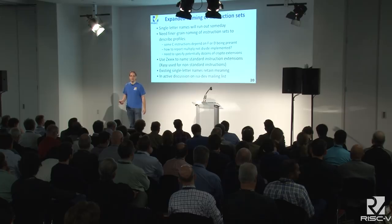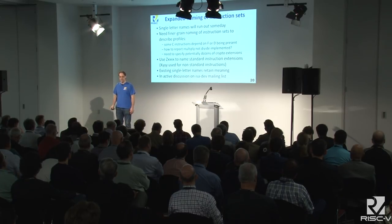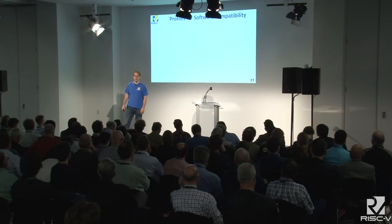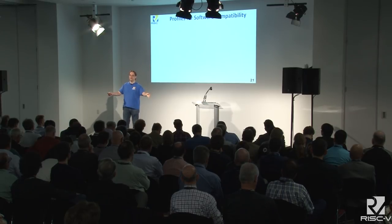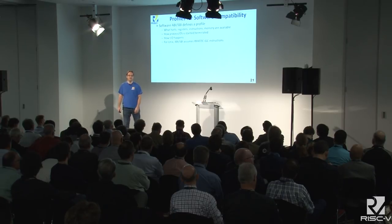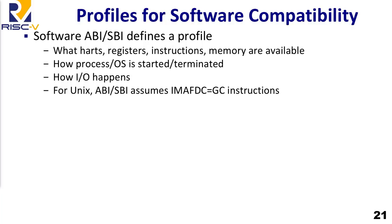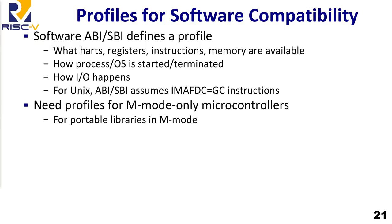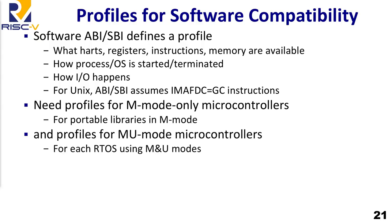All existing single-letter names retain their meaning — we're not changing those. On the ISA-dev list there's been active discussion of this proposal to expand the naming scheme. Profiles really come in two kinds: what software expects, and what's in a hardware platform. Software profiles are things like ABIs and SBIs — an ABI tells a user-level program how it should be encoded and what operations are valid. When you talk about compliance of a system, you want to make sure binary software runs correctly — that's the goal of the profile, defining what software can assume on a given platform.